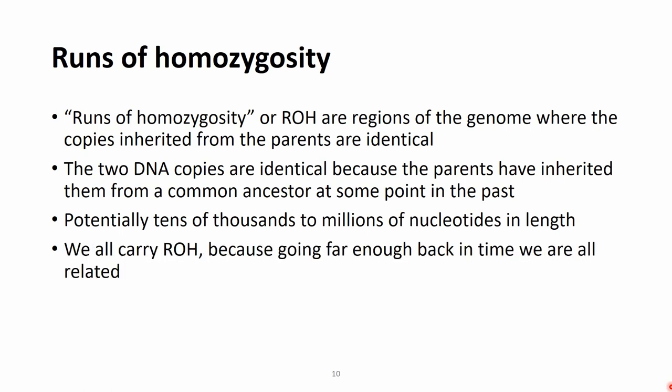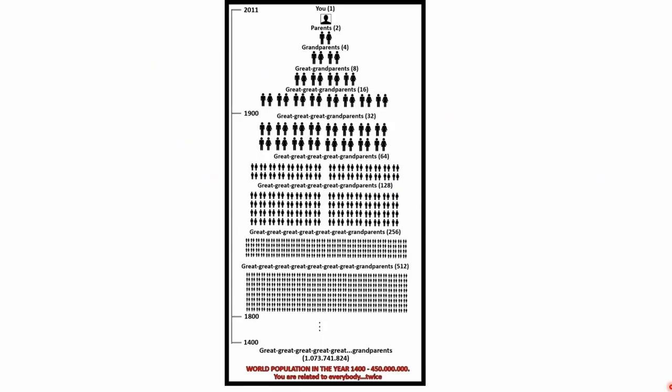In real populations you hardly find any two individuals that are totally unrelated, with a genomic inbreeding coefficient of zero. If we go back far enough in time, we can find common ancestors for virtually all individuals. The genomic data allows us to explore common ancestors far back on the timeline, though we don't necessarily want to do that all the time.